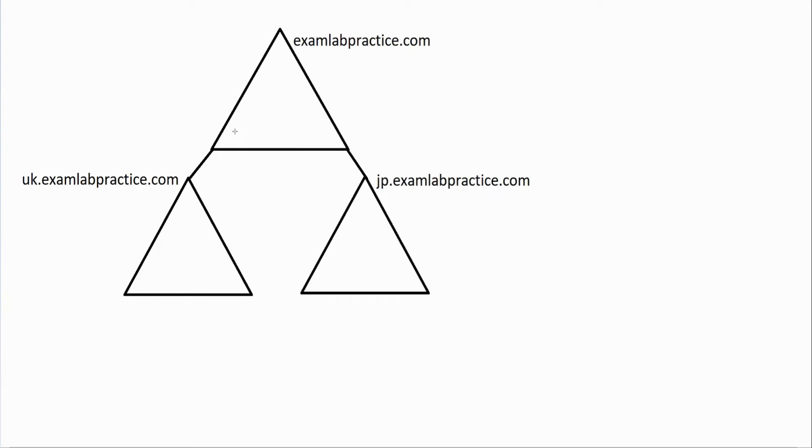Child domains can even have other child domains. If I wanted to, I could have another triangle maybe underneath the UK here and we'll call that maybe Scotland, scotland.uk.examlabpractice.com. This is getting into a bigger organization where you want to have lots of domains. I will tell you that the more domains you have, the bigger the headache a lot of times, but ultimately if you need to give full-blown admin control over the different areas of the world, using domains to do that as opposed to something known as an OU might be a better way to do it. Generally speaking, when you start getting into different branches, areas of the world, different languages, different time zones, it's a good idea to just let the admins in those areas of the world have their own domain. But the beauty is these lines here, these trust relationships, they still allow us to share resources together.